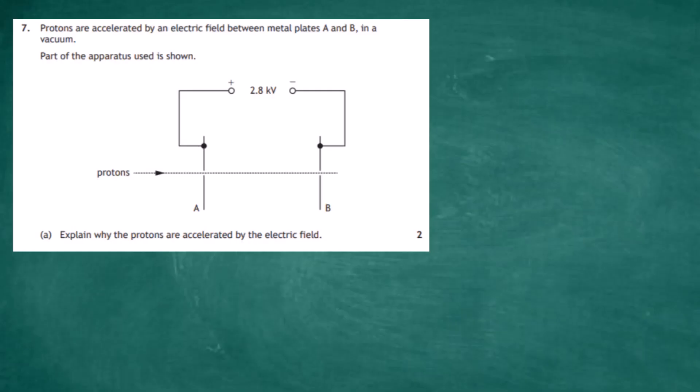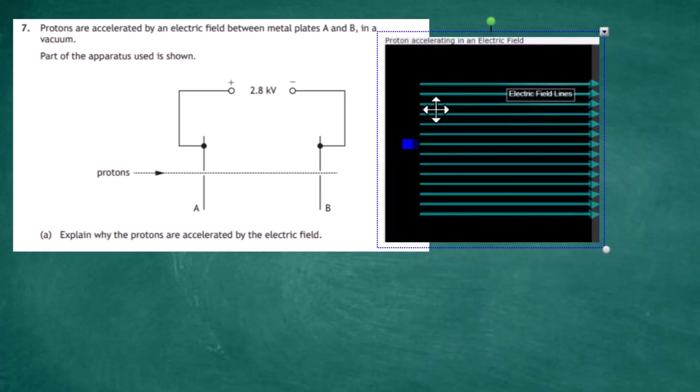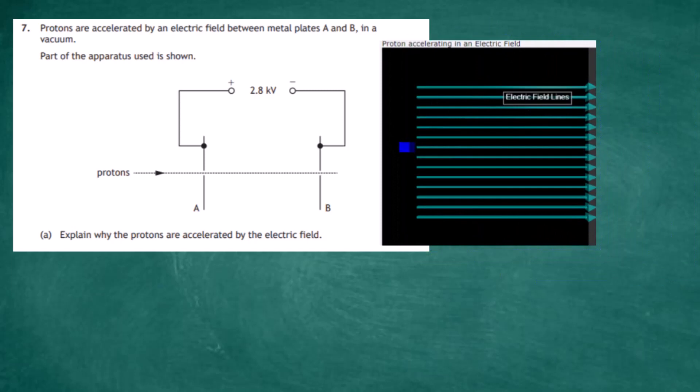Question 7 from section 2 of the 2022 Higher Physics examination from the SQA. Protons are accelerated by an electric field between metal plates A and B in a vacuum. Part of the apparatus is shown below. For two marks, we're asked to explain why the protons are accelerated by the electric field. We can visualize the electric field — there you can see the lines of the electric field, and these electric field lines tell us that a positively charged particle in that field will experience a force in the direction of the arrows.